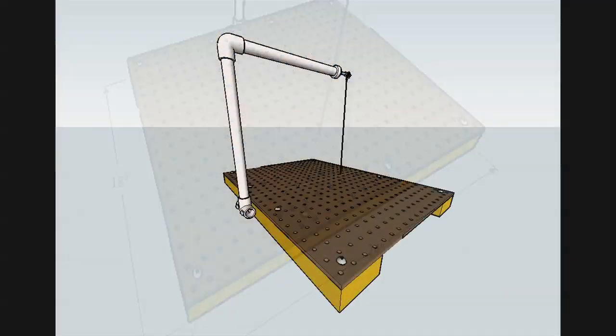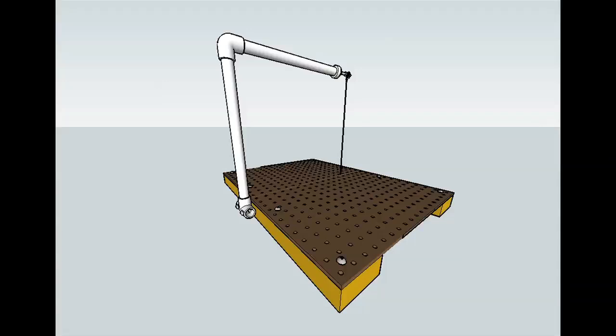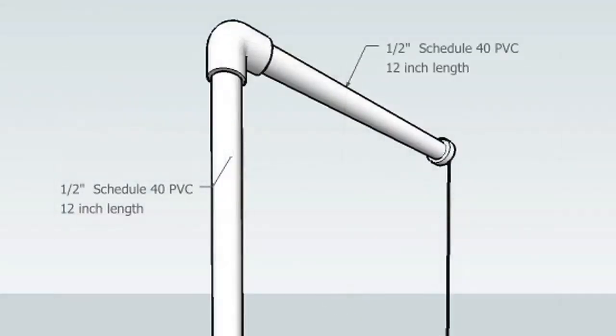The PVC overarm assembly is quite simple. It provides the perfect combination of rigidity and flexibility to maintain its shape and provide constant tension on the cutting wire. The overarm assembly is composed of three main structural components. These are two pieces of ½ inch schedule 40 PVC tubing and a single 90 degree elbow.